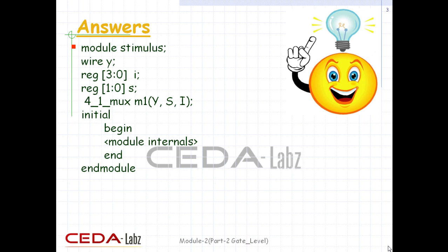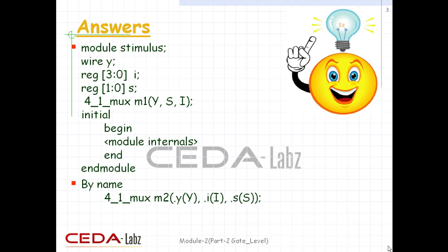As we know, the top-level module or test bench internals are written within an initial and begin block, so initial followed by begin and end block. Finally, the module is terminated with the keyword end module. The next question is to connect the ports by name for the same module — here's how we instantiate a module by name.